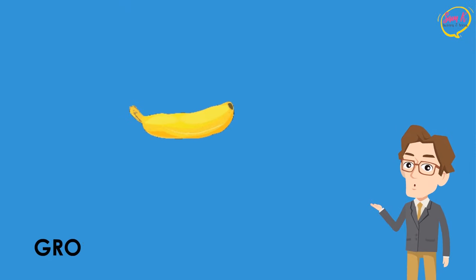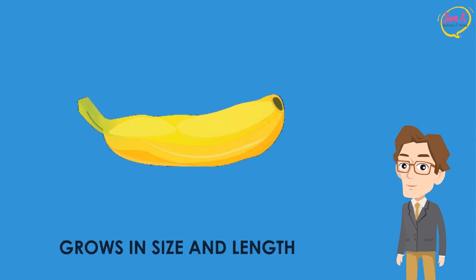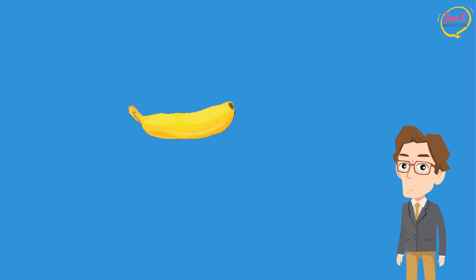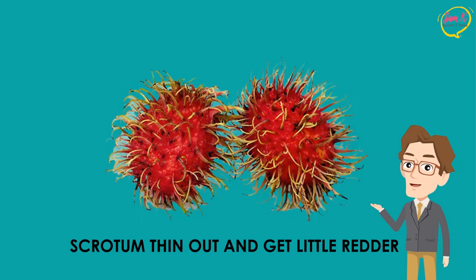As your penis grows in size and length, you can also expect your testicles to grow alongside it, and your scrotum will also thin out and get a little bit redder.